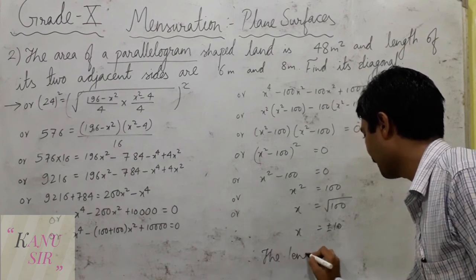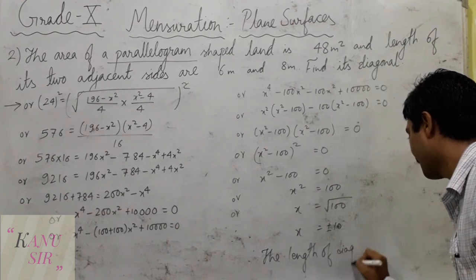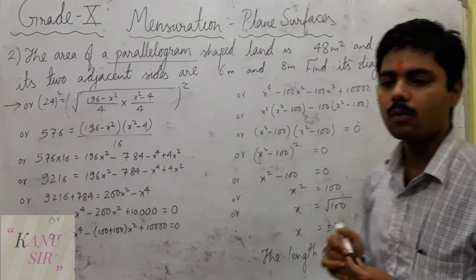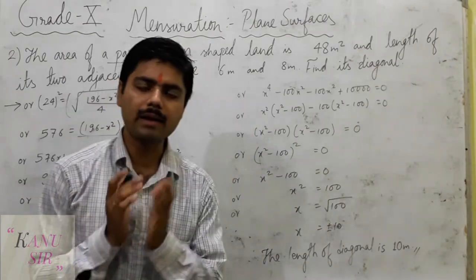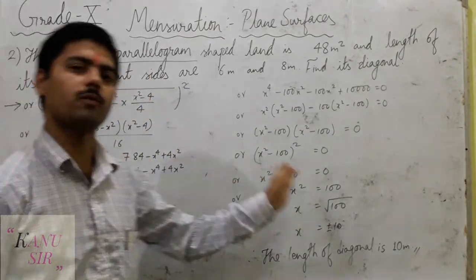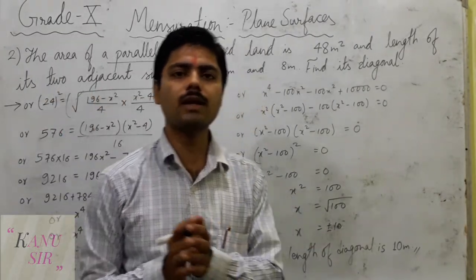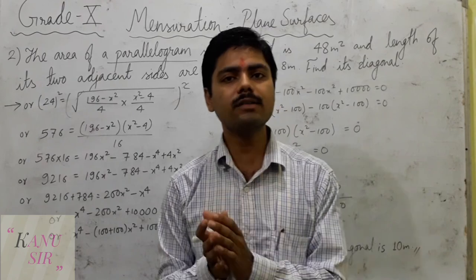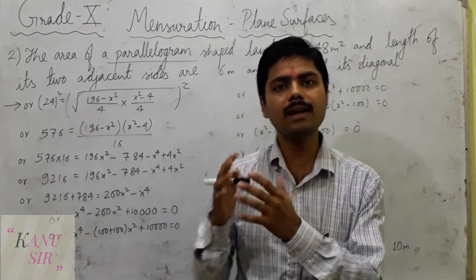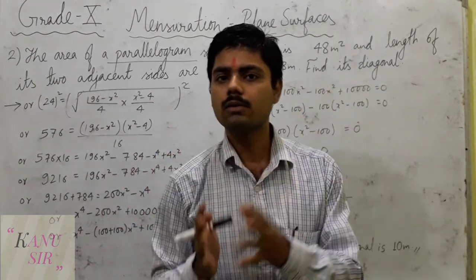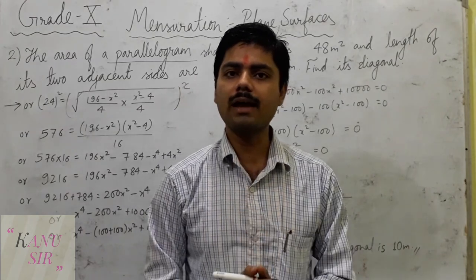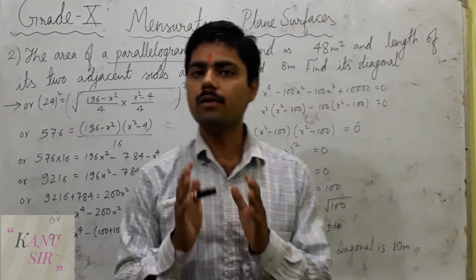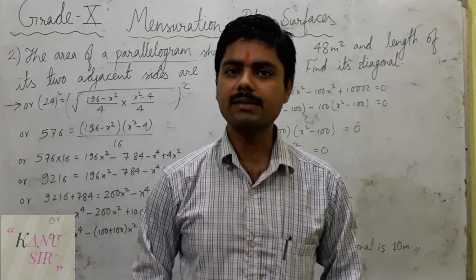Since we are discussing length, the length will never be negative. Therefore the length of the diagonal is 10 meters. So this is how we solve long questions related to parallelogram — we use the formula of a triangle here. Don't forget to share this video, like it if you find it educational and important, and subscribe to the channel. Keep practicing, keep learning. Bye.